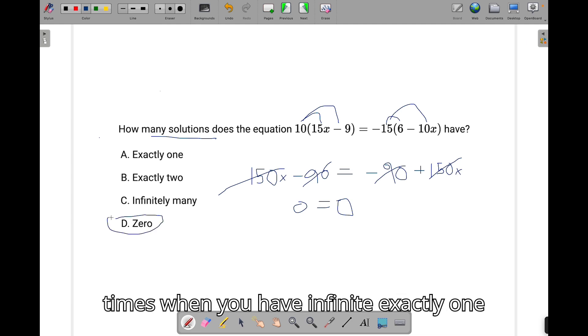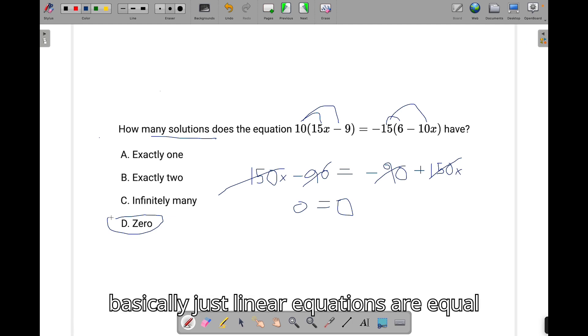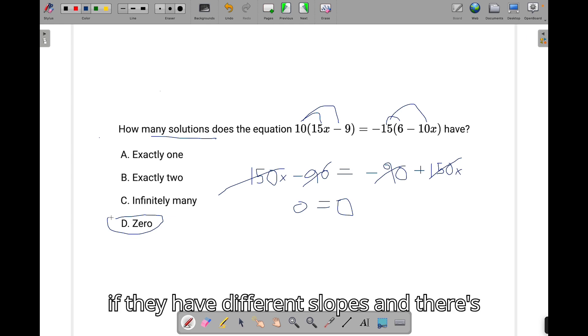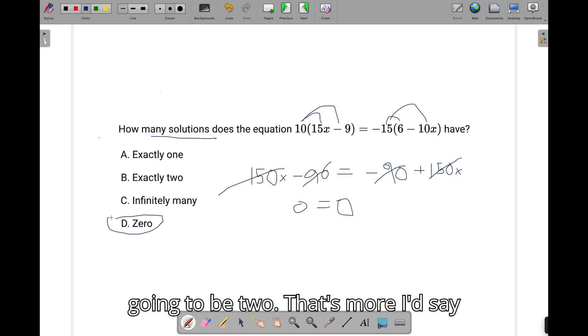There are times you're going to have infinite, exactly 1 or exactly 2. You're going to have infinite if these lines, these are basically just linear equations, are equal to each other. You're going to have 1 if they have different slopes, and there's going to be 2, that's more, I'd say, involving quadratics, in a way.